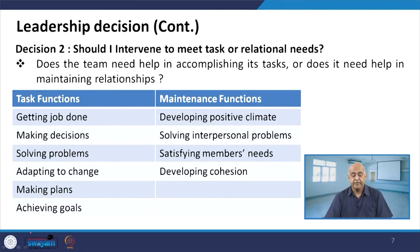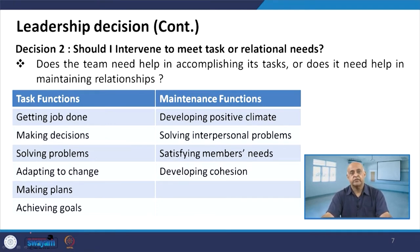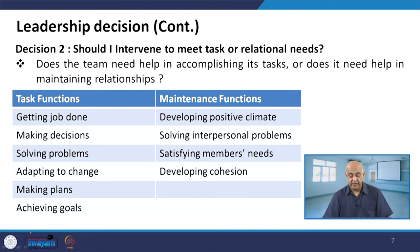Should I intervene in mid-task or relational needs? Getting the job done means helping, maintaining the relationship, making decisions, solving problems, adapting to change, making plans and achieving goals — these are task functions. But there are certain needs where maintenance functions must be adopted: developing a positive climate, solving interpersonal problems, satisfying members' needs and developing cohesion.